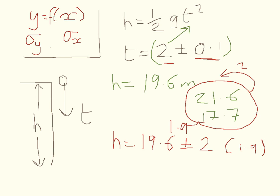If you want to be very formal about it, you can actually say that h equals 19.6 plus 2 minus 1.9. And that's the way you write down asymmetric error bars.